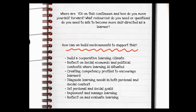Take a moment to think about where you are on this continuum and reflect on how you move yourself forward. If self-directed learning is one way adults learn successfully, how can we build environments to support this? We need to build a cooperative learning climate, create competency profiles for learners, diagnose learning needs individually and as a group, and set individual and group goals. As a facilitator, my job is to implement and manage the learning, and at the end we need to reflect on and evaluate how well we did as a group.